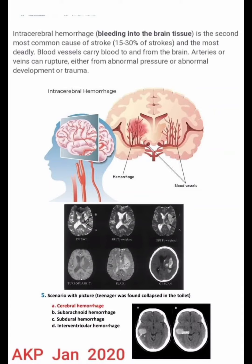Assalamu alaikum dear doctors. In this video I am discussing intracerebral hemorrhage. Intracerebral hemorrhage, that is bleeding into the brain tissue, is the second most common cause of stroke — 15 to 30 percent of strokes — and the most deadly. Blood vessels carry blood to and from the brain; arteries or veins can rupture either from abnormal pressure, abnormal development, or trauma.